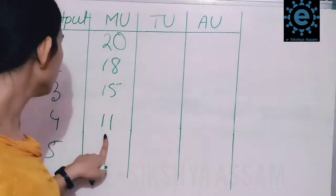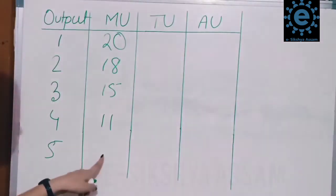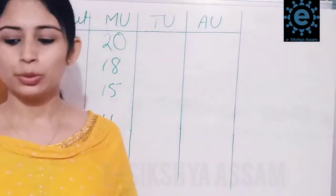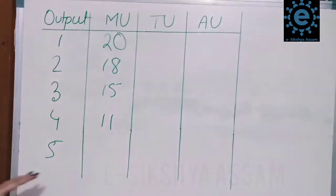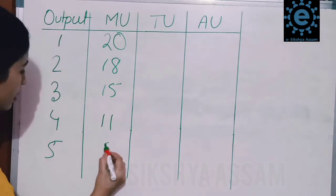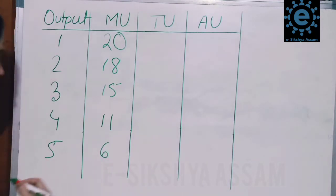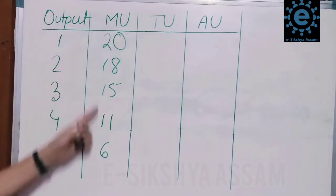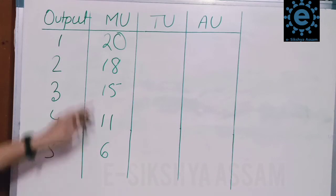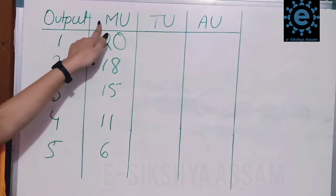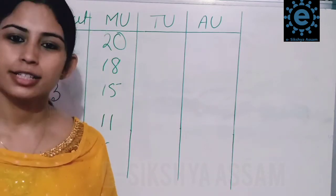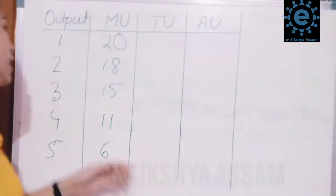Now let's look at the table. The first unit gives a certain level of satisfaction, and the second unit gives a lower level. MU stands for marginal utility.